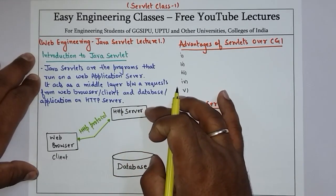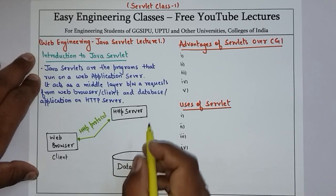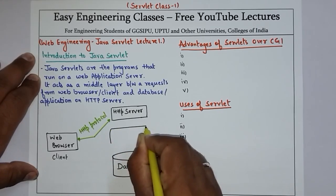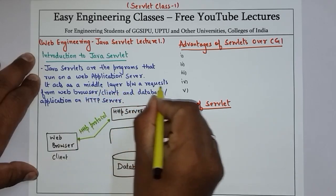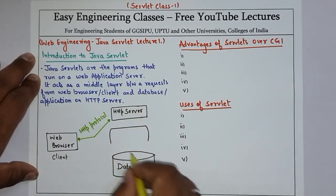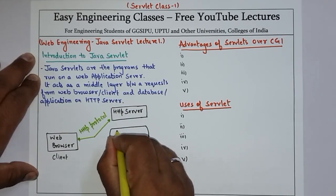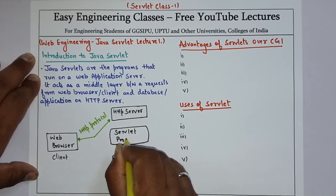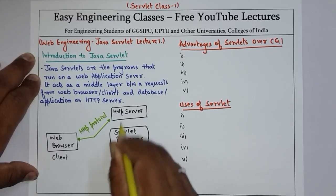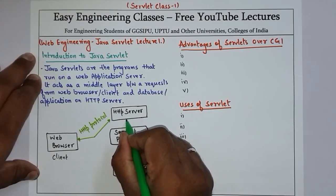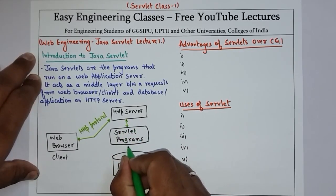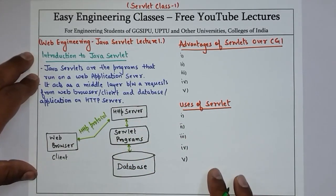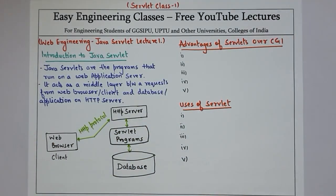In the middle of the HTTP server and the database application hosted on the server, we have what is called the servlet program. That is why we said it acts as a middle layer between the request from the client and the database. The HTTP server interacts with the servlet program, and then the servlet program interacts with the database. That is how the servlet works in a web application.